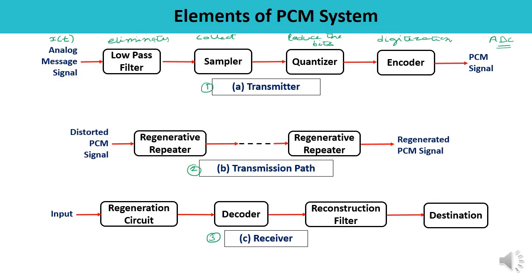Now let's talk about the transmission path. As you can see in diagram two, the transmission path connects the transmitter to the receiver, and regenerative repeaters are used along this path. The purpose of regenerative repeaters is to reconstruct or regenerate the transmitted sequence of coded pulses so that, in case of any signal distortion or noise, the overall signal can be reconstructed. Regenerative repeaters also increase signal strength, overcoming any signal loss, distortion, or noise.